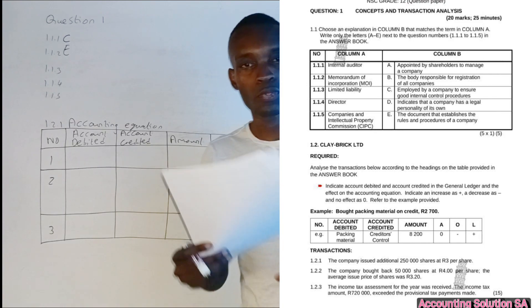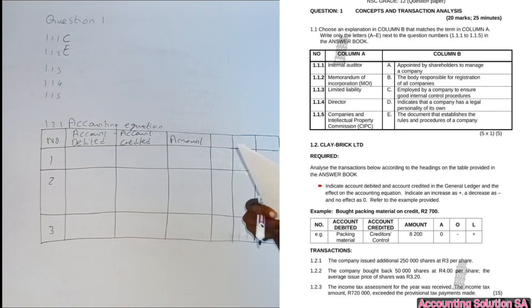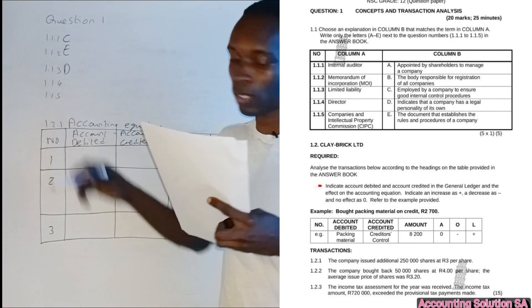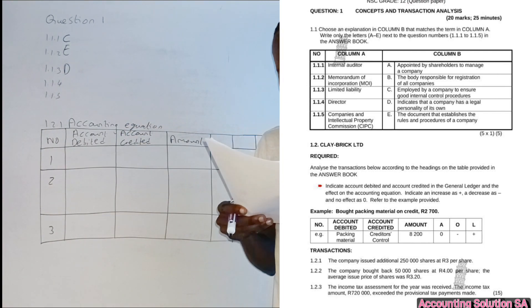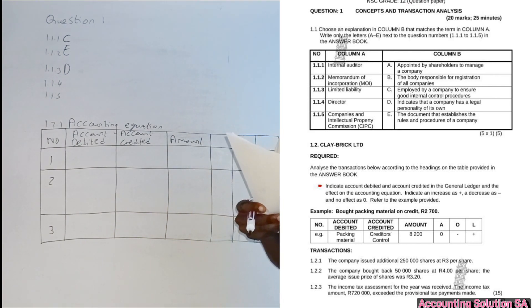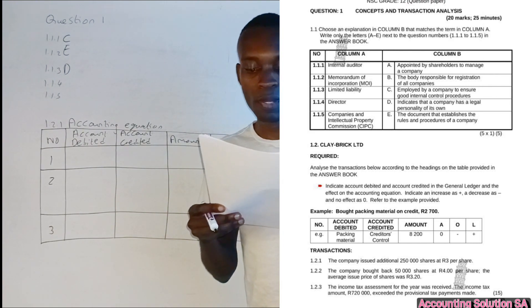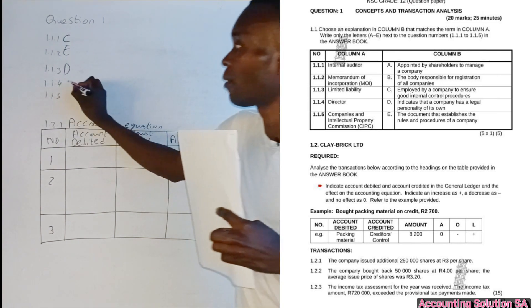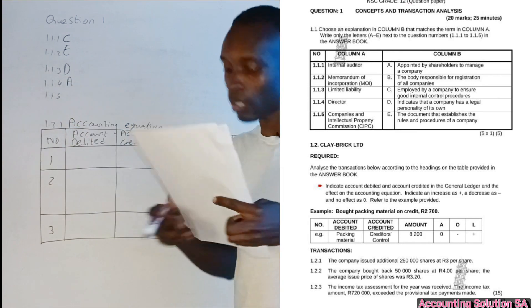Number 1.1.4, directors. Number A, appointed by shareholders to manage the company. Directors are appointed by the shareholders, number A.